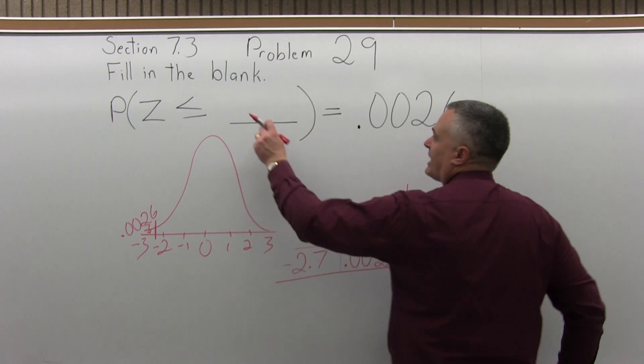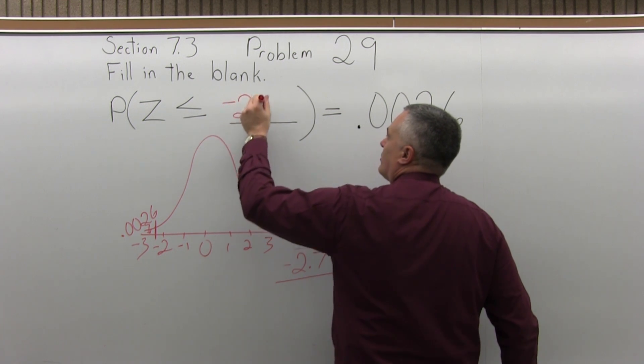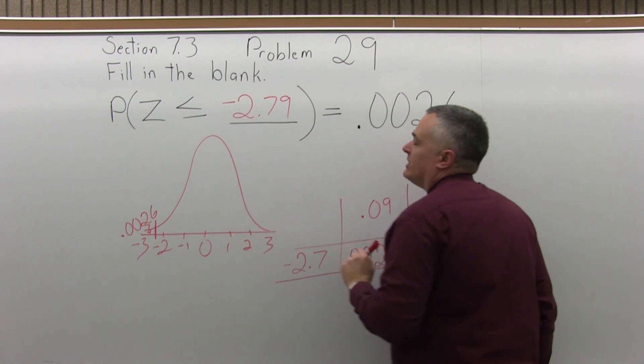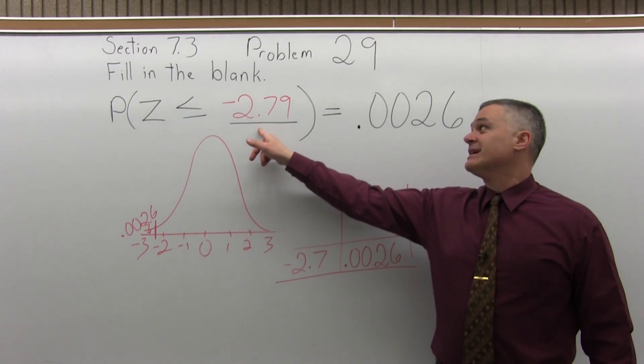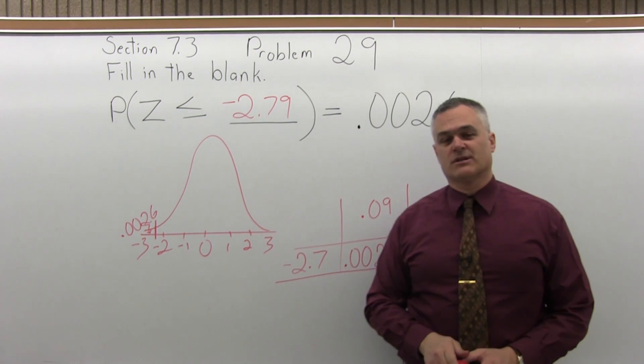So the probability that Z is less than or equal to negative 2.79 is equal to .0026.